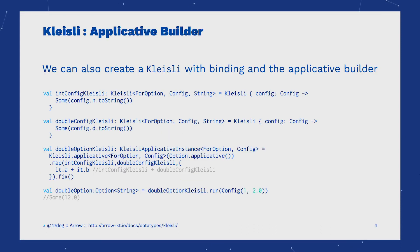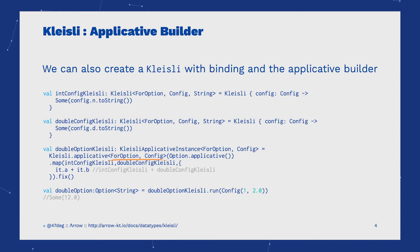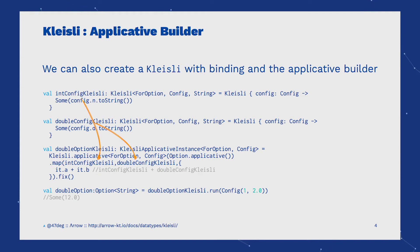We can use the Applicative Builder to create a Kleisli. In this case we specify the monadic context and the input type, which creates a Kleisli applicative instance. We can then use functions like Map to get the result of two other Kleislis and return the sum of both.